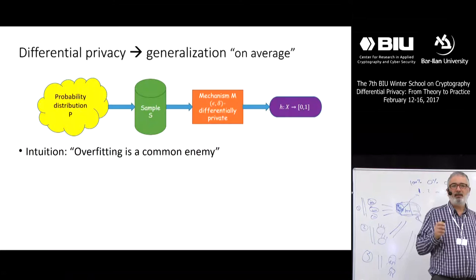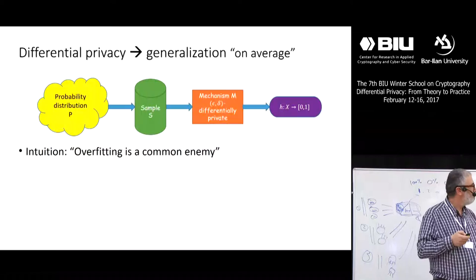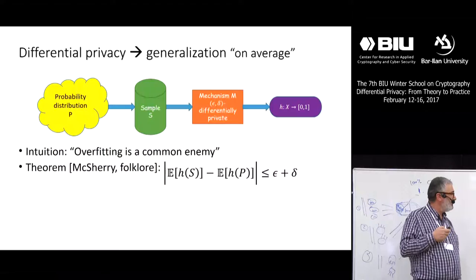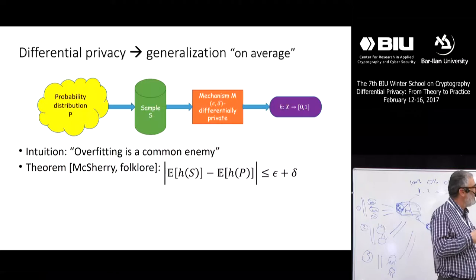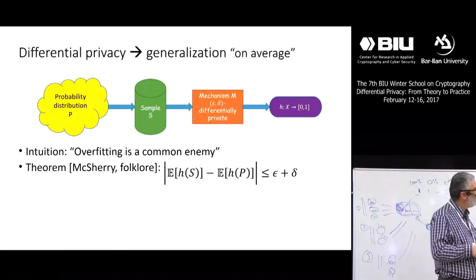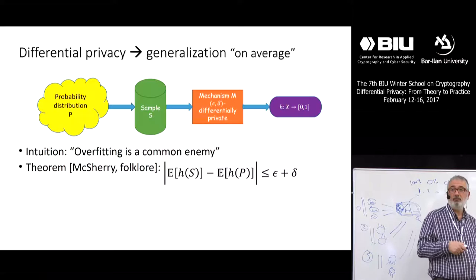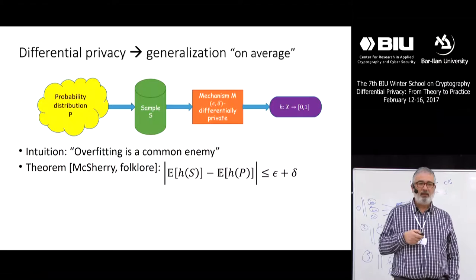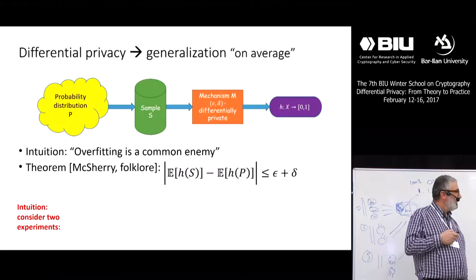The intuition is, as Vitaly said, that overfitting is a common enemy of both privacy and generalization. We want to prove the following statement: in expectation, if we apply H on S and compare it with applying H on P, in expectation the difference is bounded by epsilon plus delta — the parameters from differential privacy help us bound this.